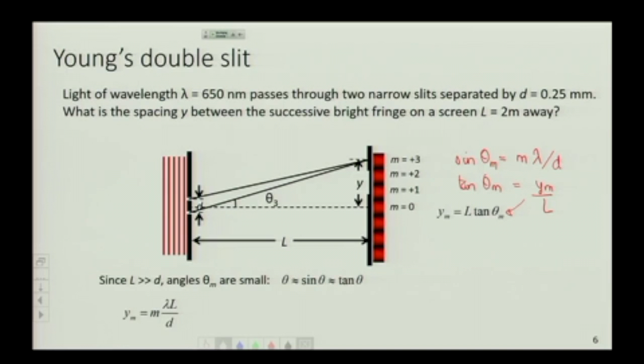So I say m lambda over d is equal to ym over l, right? Or ym is m lambda l over d.